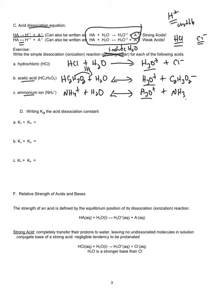With balancing of equations, make sure the number of atoms are the same on each side, but also make sure the reaction is balanced in charge. You'll notice on the bottom one that it's +1 on the left side and +1 on the right side. On the one above it, it's neutral on the left and +1 and −1 on the right, which adds up to neutral — balanced in both charge and atoms.